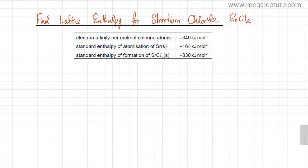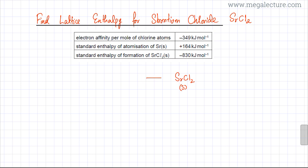We're going to construct the Born-Haber cycle. I start with the enthalpy of formation of strontium chloride — that's when one mole of SrCl₂, which is an ionic solid, is formed from its constituent elements: strontium, a group 2 metal in solid state, and chlorine in its standard state as Cl₂ gas. This equation represents the enthalpy of formation of SrCl₂.